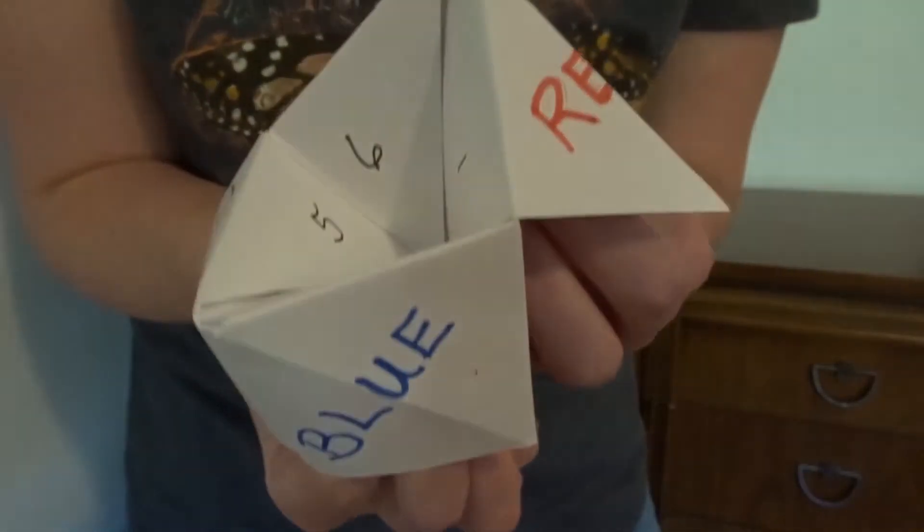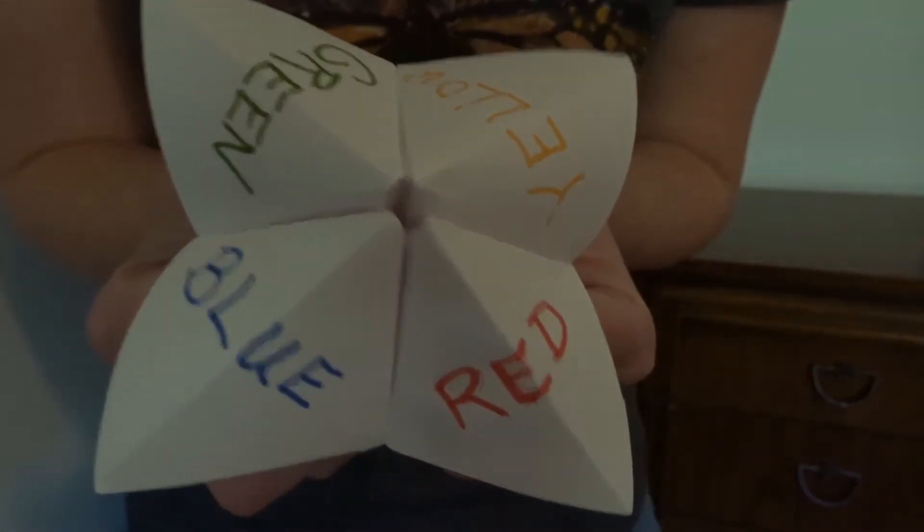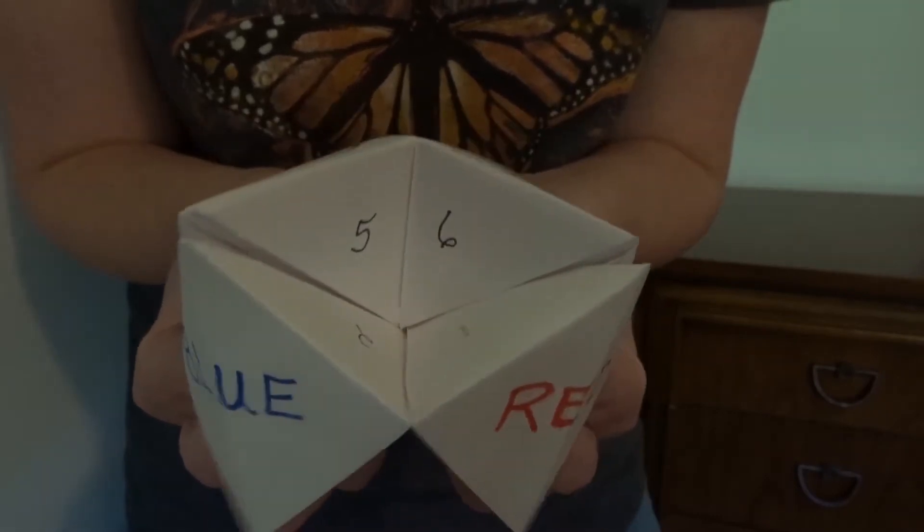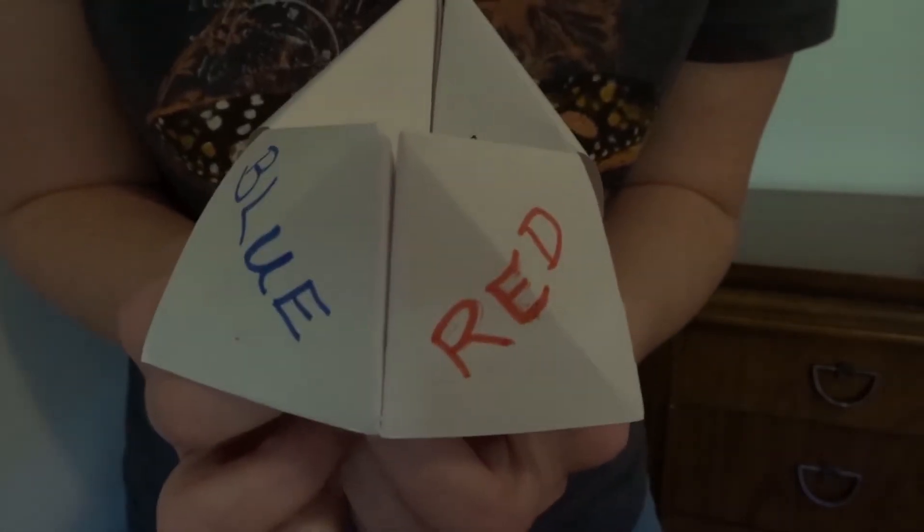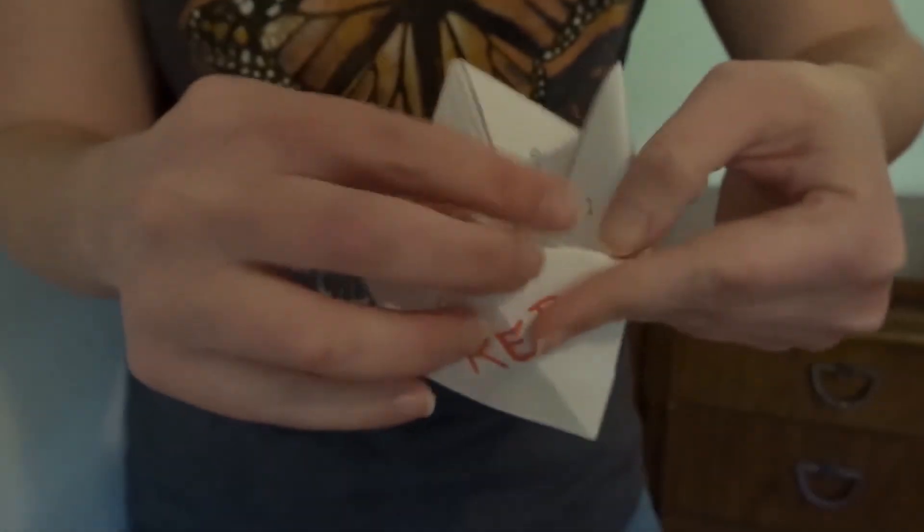Now let's pick a number here. Let's go with 5: 1, 2, 3, 4, 5. And let's pick a number. Let's go with 8. Let's see what 8 says. It says, Jesus died on the cross.